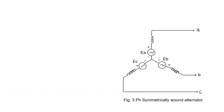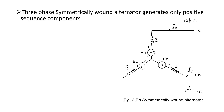Let us consider a three-phase symmetrically wound alternator. The current flowing through phase A is IA, phase B is IB, and phase C is IC. Now if we consider this as a symmetrical system, all the self-impedances are equal and the mutual impedances between the phases are also equal. The symmetrically wound alternator is a perfectly balanced system, and for a balanced system only the positive sequence components are present. Similarly, this synchronous generator generates only the positive sequence components, meaning it produces only the positive sequence EMF. It will not produce the negative sequence or zero sequence EMFs.